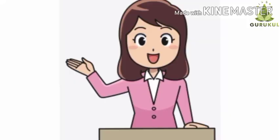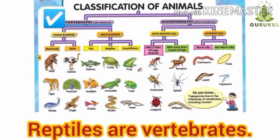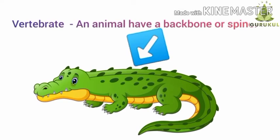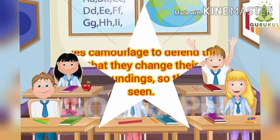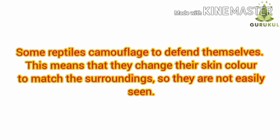As we know, reptiles are vertebrate animals, meaning animals that have a backbone or spine — for example, the crocodile. Some reptiles camouflage to defend themselves, which means they change their skin color to match their surroundings so they are not easily seen.